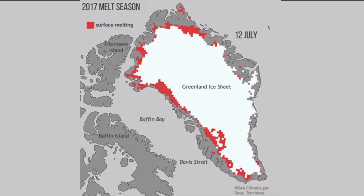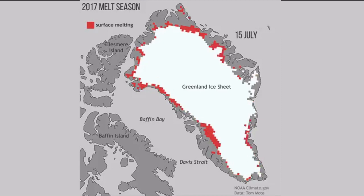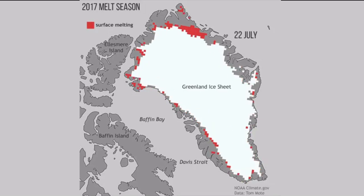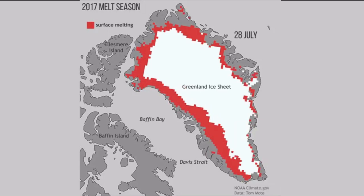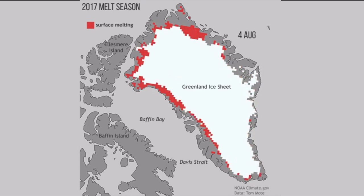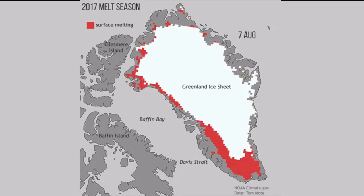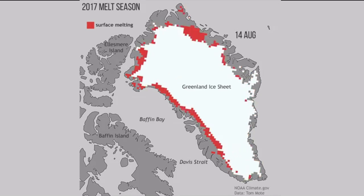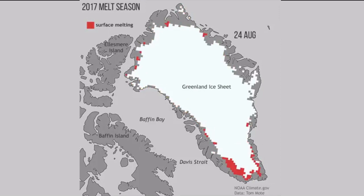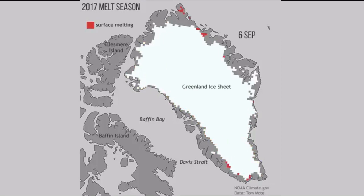The Greenland ice sheet experiences variable melt throughout the year, with total melt area changing between days all summer long. Here, we can see daily measurements of the melt area on the ice sheet as measured by satellites. Note that the satellite radar only measures if snow is wet or dry, so it can only measure the area of snow melting, not the amount.